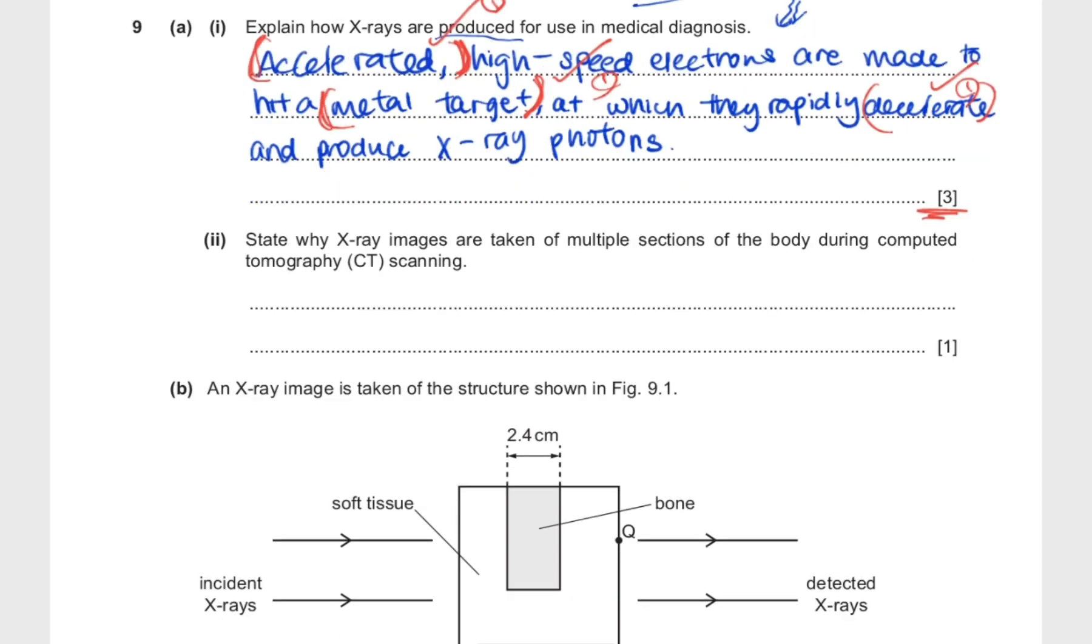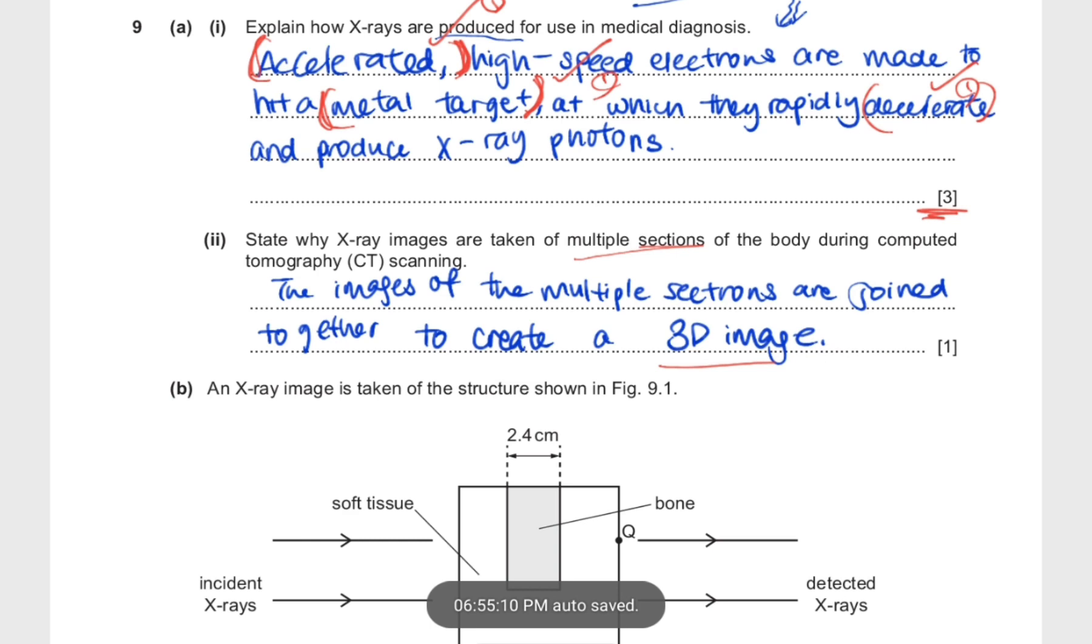Then there is a short part on CT scanning or CAT scanning. They ask us to state why x-ray images are taken of multiple sections of the body during CT scanning. So CAT scanning is something that basically scans your body from multiple angles, and then they create a 3D image with those images. So you can simply write that, and the keyword obviously here is the 3D image.